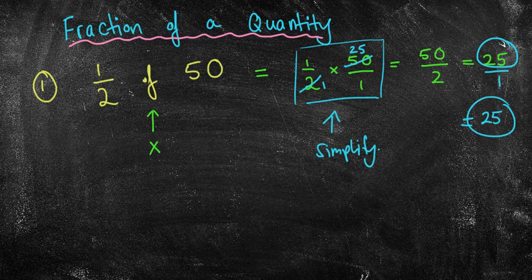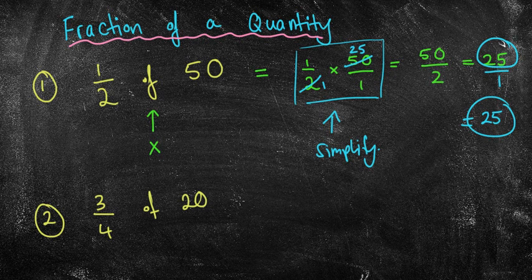Now that was a really easy question. So let's have a look at a more challenging one. Let's find 3 quarters of 20. Can you do that one? Now, once again, I'm going to rewrite it and put 3 quarters of means times and I've got 20 over 1.